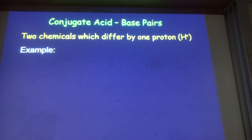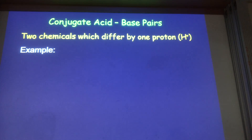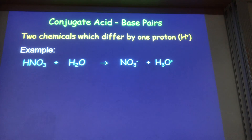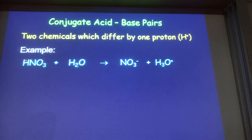This is called conjugate acid-base pairs. We know that an acid can turn into a base and vice versa. A conjugate acid-base pair are those two chemicals which differ by one proton. In this case we have nitric acid losing its proton and reacting with water, so nitric acid is acting as an acid donating a proton.